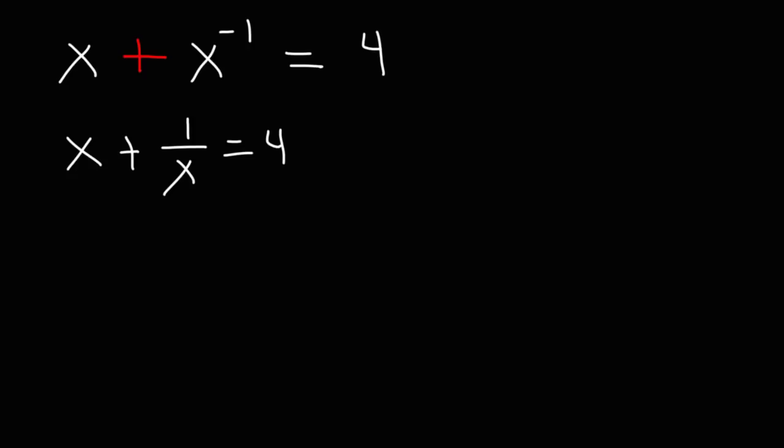One of the best things that we can do is get rid of the fraction. So I recommend multiplying everything by x. So we're going to have x times x plus 1 over x times x. And that's going to equal 4 times x.